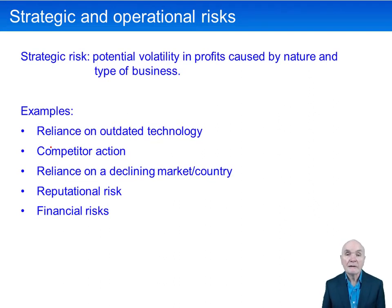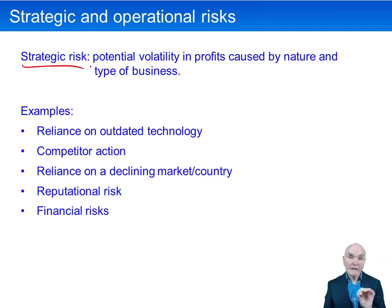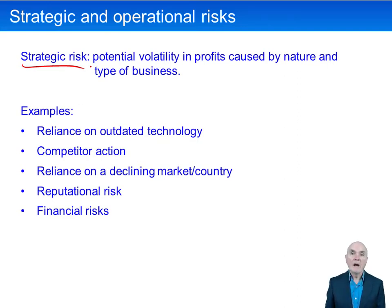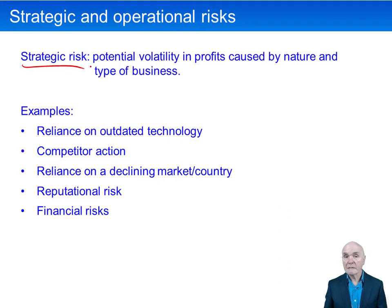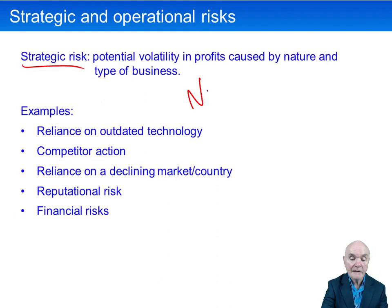Risks are categorised into four types. The first two are strategic and operational risks. Strategic risk is really going wrong in the long term — making fundamental errors in decisions or experiencing fundamental changes in the market. A classic example is Nokia, which suffered from strategic risk when long-term technology changed.